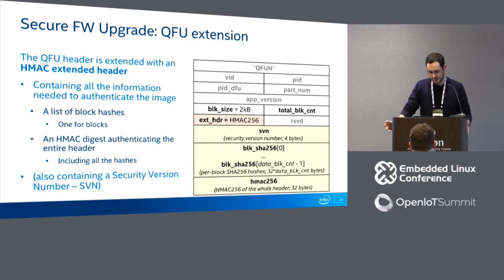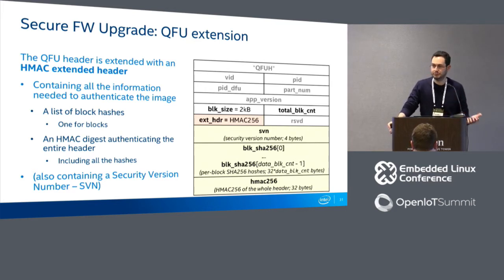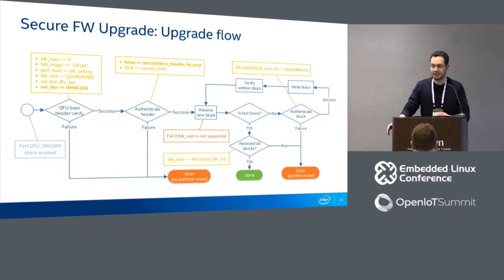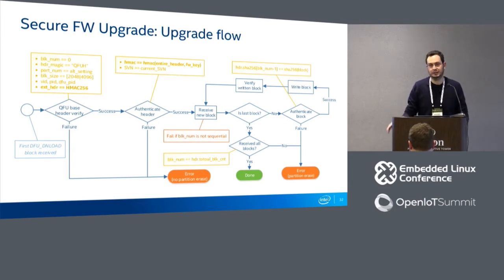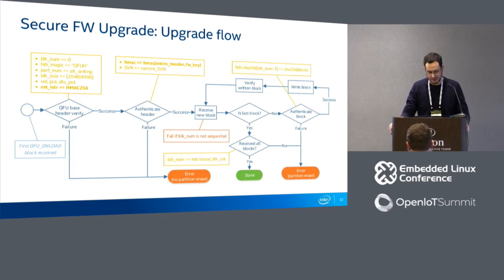We extended the header by adding an HMAC extended header containing all information needed to authenticate the image. Rather than computing HMAC over the entire image, we authenticate the header and store inside it an array of SHA hashes — one per block. During upgrade, the first packet contains the header; we authenticate it by computing its HMAC and comparing with the stored value. Once the header is authenticated, the SHA hashes are trusted, and for every subsequent block we compute its SHA and compare with the authenticated header.